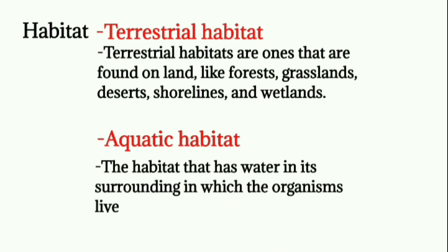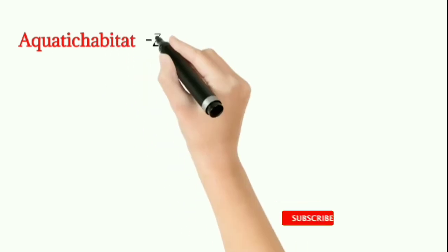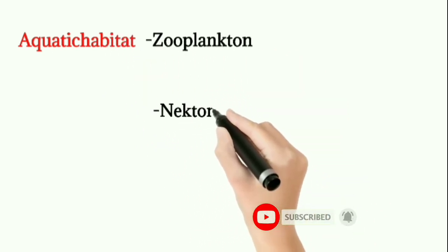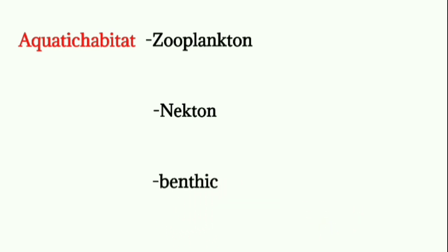We further classified aquatic habitat into three types. The three types in aquatic habitat are: zooplankton, nekton, and benthic. Zooplankton are the animals living on the surface of the water. Nekton are the animals living in the middle of the water body. Benthic are the animals living at the bottom of the water body.